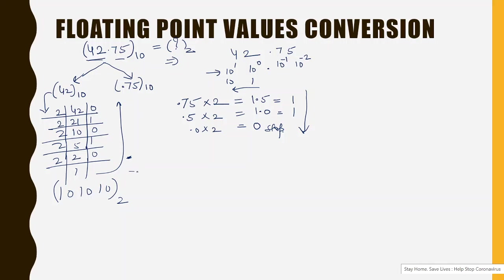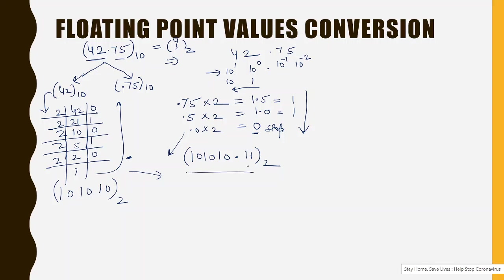Combining both results, the integer part gives 101010 and the fractional part gives .11. So the binary equivalent of 42.75 is 101010.11. Trailing zeros on the right side of the decimal are not included.